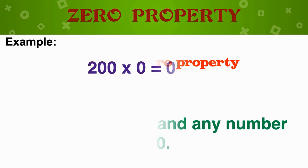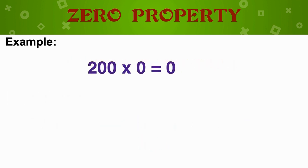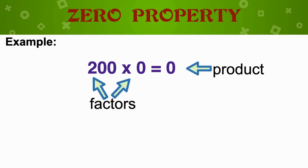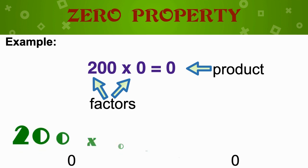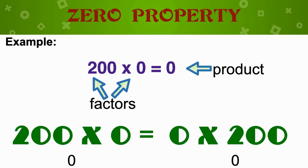Let's look at this example: 200 times 0 is equal to 0. The factors 200 and 0 will produce a product of 0. Using the zero property rule, that means if 200 times 0 is 0, then 0 times 200 is also 0.